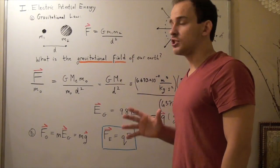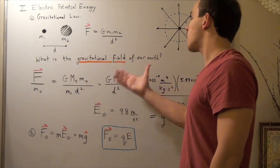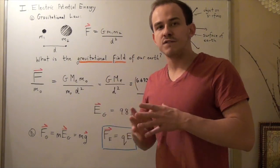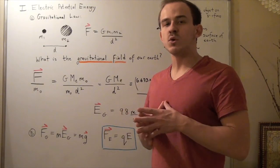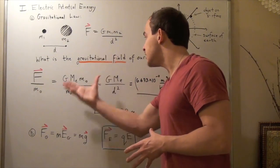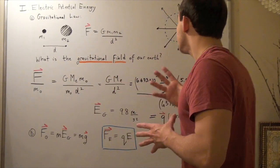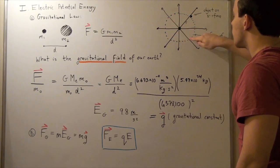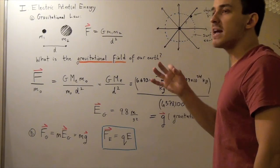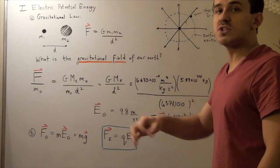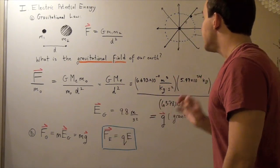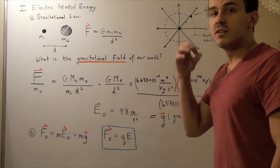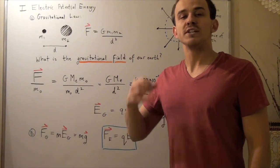Now I want to ask: what is the gravitational field of our Earth? We just spoke about what the electric field is and how electric field and charge are related. Now I want to ask how mass and the gravitational field are related. Suppose the blue dashed line represents the surface of the Earth, and inside the Earth, the mass is distributed uniformly. That means we can treat the Earth as a point mass, the same way we speak about point charges.